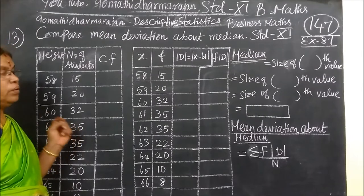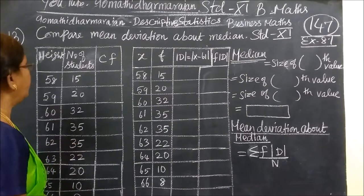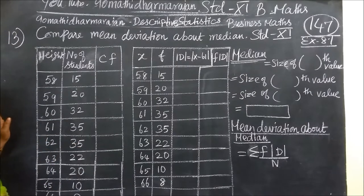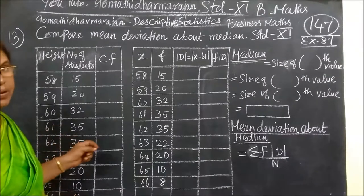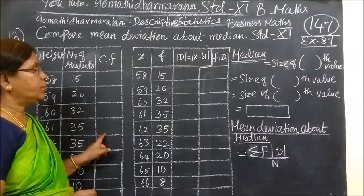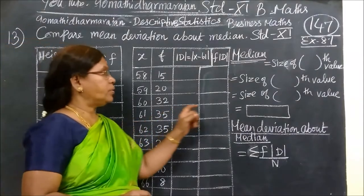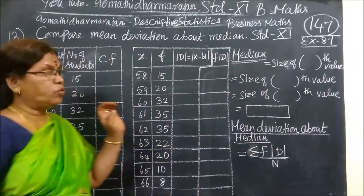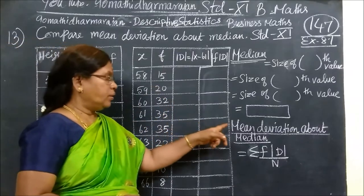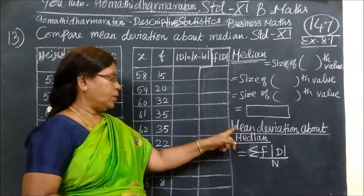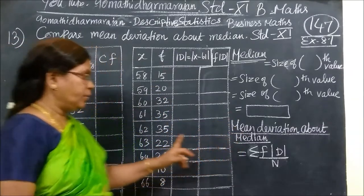Now, see question number 13. Business math life says 8.14 to come. Now, you want to compare mean deviation about median. For that, first you are finding cumulative frequency. Cumulative frequency can do with this. And the cumulative frequency is used for median, then mean deviation about median.